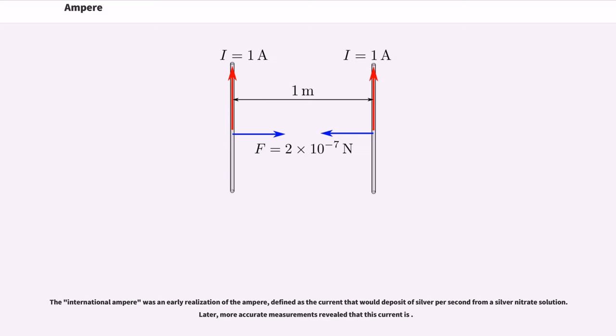The international ampere was an early realization of the ampere, defined as the current that would deposit 0.001118000 grams of silver per second from a silver nitrate solution. Later, more accurate measurements revealed that this current is 0.99985 A.